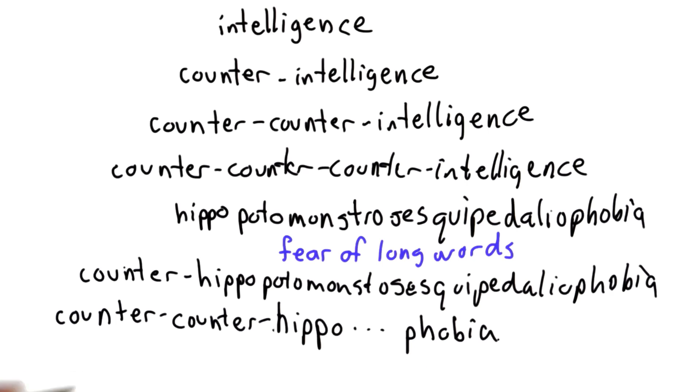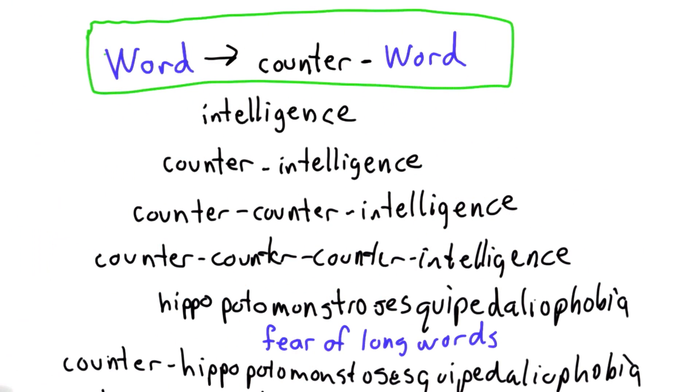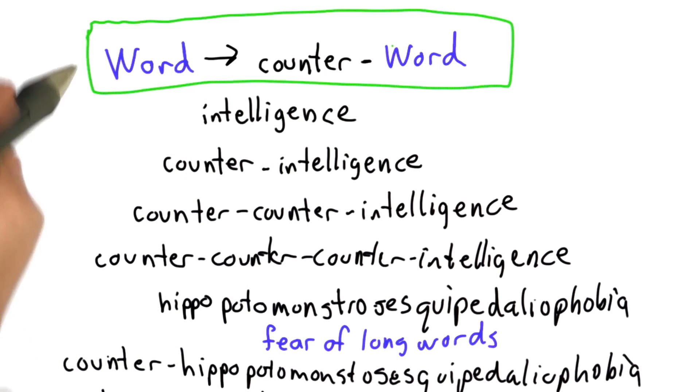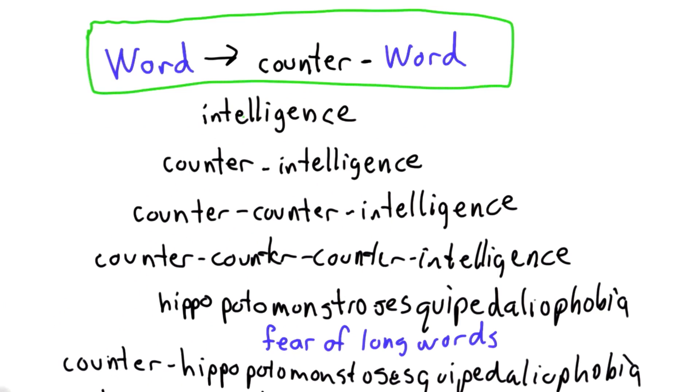So the point is, because English has this rule that allows us to make new words from old words, there's no such thing as the longest word. We can always make a longer word starting from any word that we have. If you remember how BNF grammars work, then you should be able to answer the next quiz.